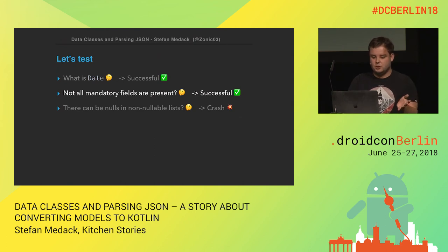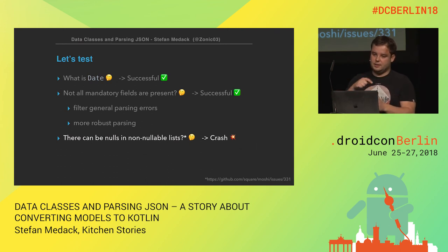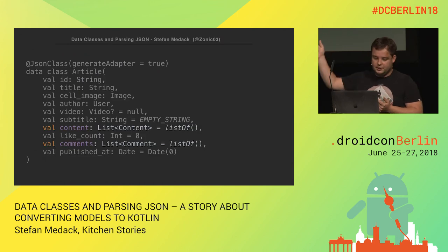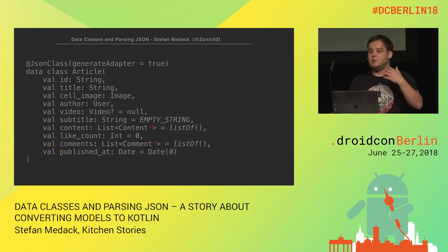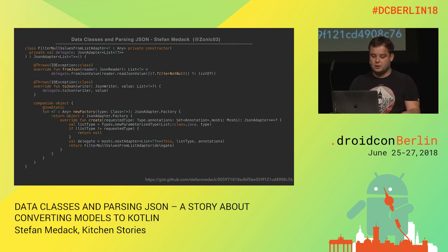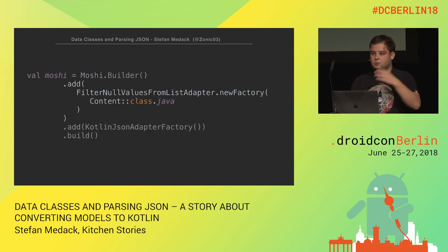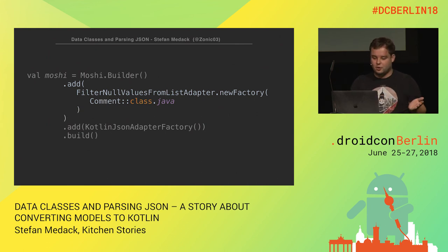We found another crash — not unique to our solution but a problem with how Moshi in general serializes JSON into models. Lists declared in Kotlin as non-nullable can contain nullable items. Content and comments are supposed to be non-null in the list, but somehow Moshi manages to serialize nulls into this list, which crashes later when you use it. Another adapter — it's in the repo — does the same thing: I add it to the pipeline and say for 'content', filter out null values from the list. I do the same for 'comment', and all tests are passing.